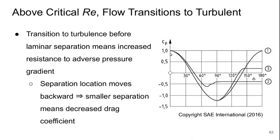We can see that here. Here, the horizontal axis is the angular location around the sphere. Zero is at the front, 180 degrees is at the back. Curve one is the ideal inviscid flow pressure distribution which is symmetric and therefore would yield zero drag.